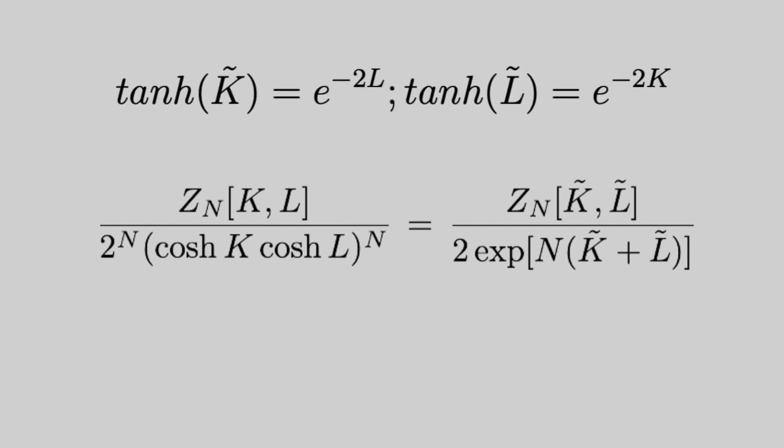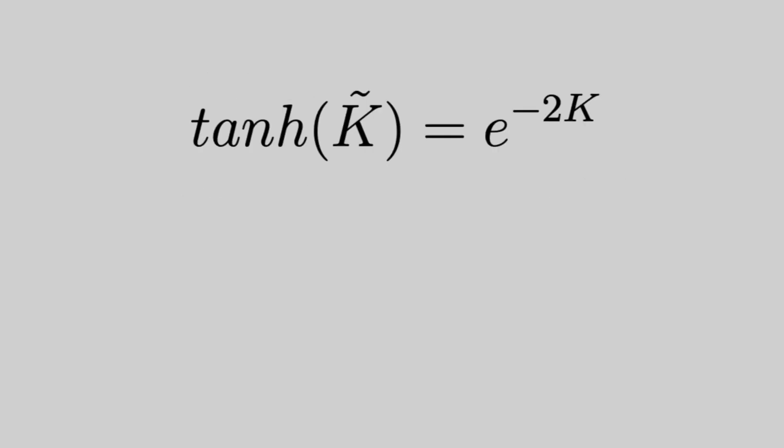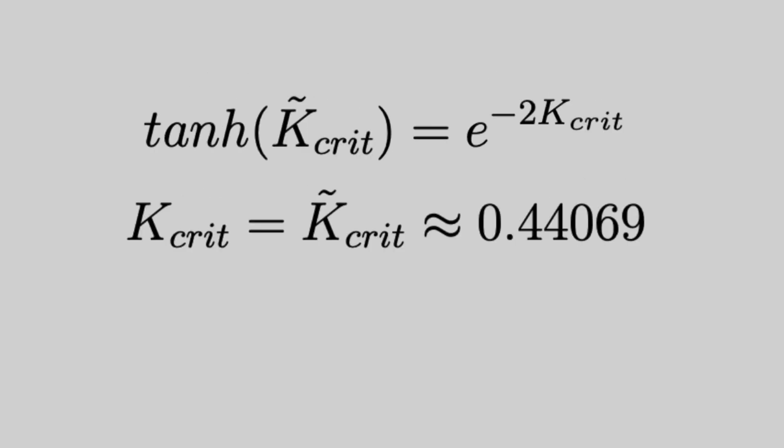If we consider just the isotropic case where K equals L, K tilde equals L tilde, now all we have to do is solve this equation. This gives us our final answer for the critical temperature.